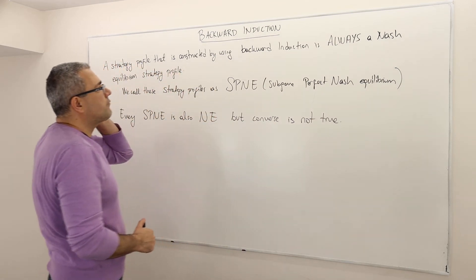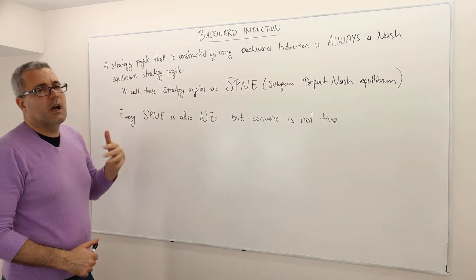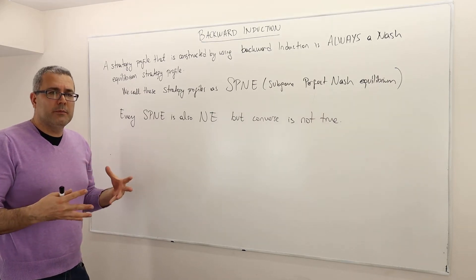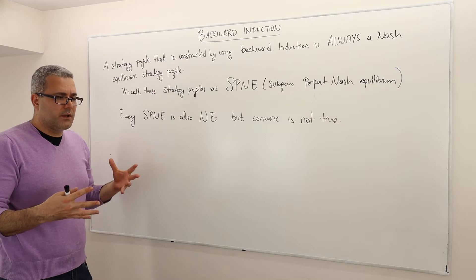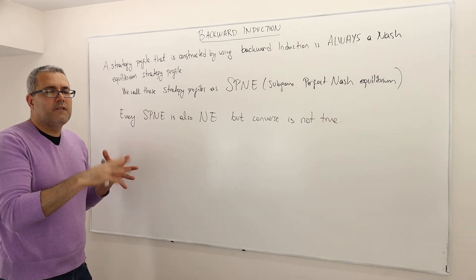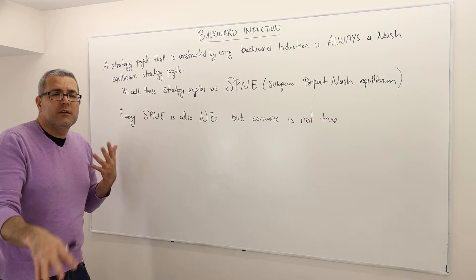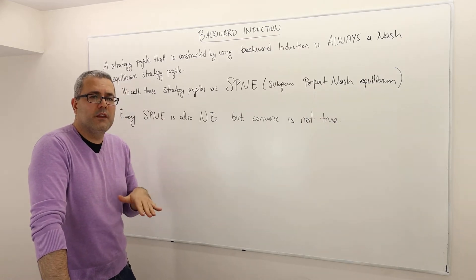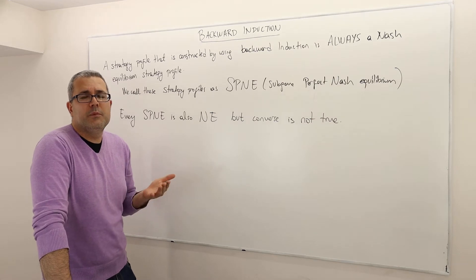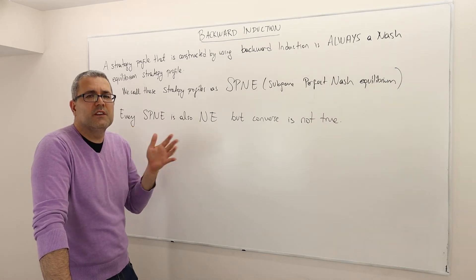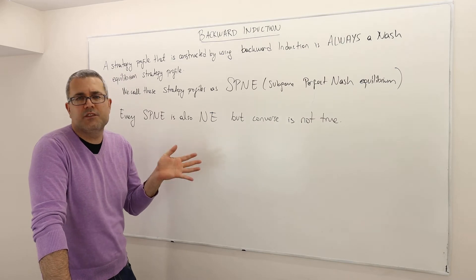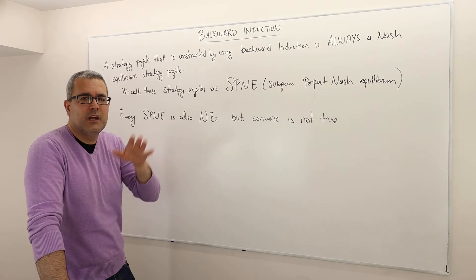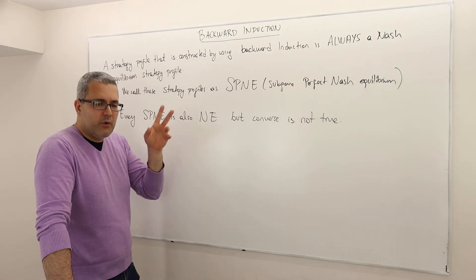Remember the concept of backward induction — the idea is always finding the optimal strategies. For that reason, we start from the last-moving players. Their optimal strategies don't depend on anybody else's strategy because they are the last movers, and whenever they choose some action the game will be over.